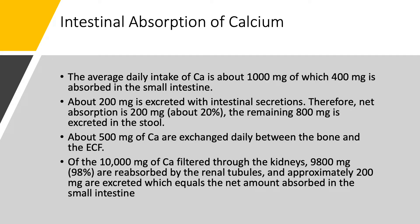What about intestinal absorption of calcium? The daily intake of calcium is approximately 1,000 milligrams, though it varies between people. Of that, 400 milligrams is absorbed in the small intestine, but 200 milligrams is excreted with the intestinal secretions. So we have a net intestinal absorption of only 200 milligrams, which is about 20%. The remaining 800 milligrams is going to be excreted in the stool.